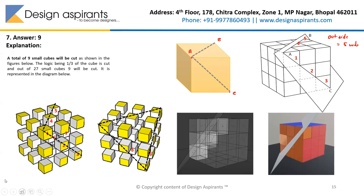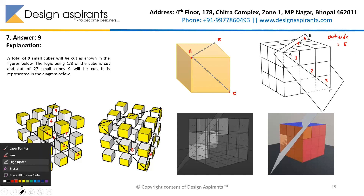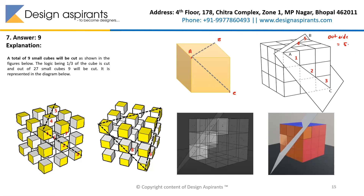Did you all understand what five I mentioned? So this one is getting cut, this one is getting cut, this one is getting cut, this one is getting cut — and this one is another which will get cut. Likewise, there are five cubes from outside we can see that are definitely getting cut.